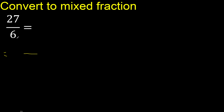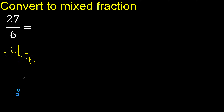First, the same number here, 6. Multiply by which number is nearest to 27 but not greater. 6 multiplied by 5 is greater; multiplied by 4 is 24, which is not greater.